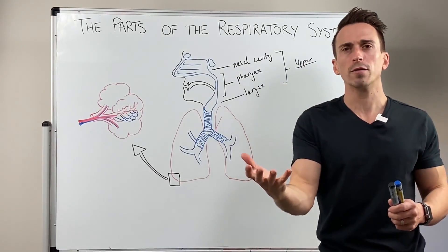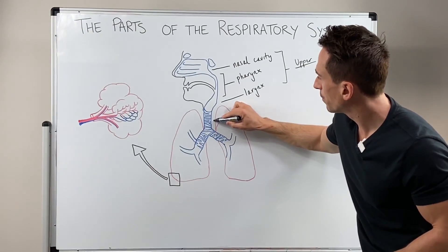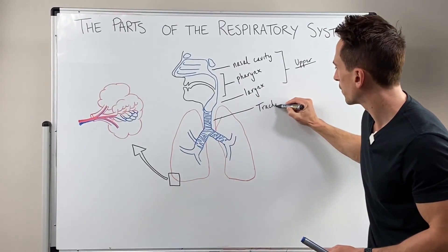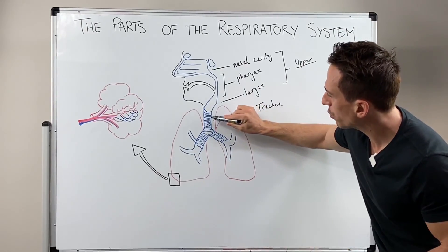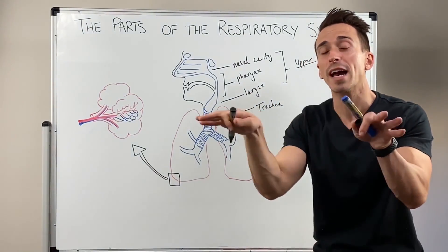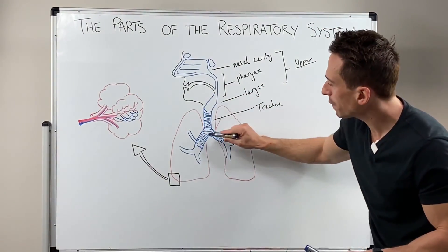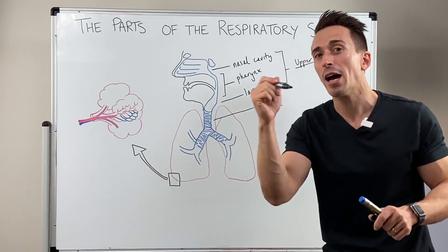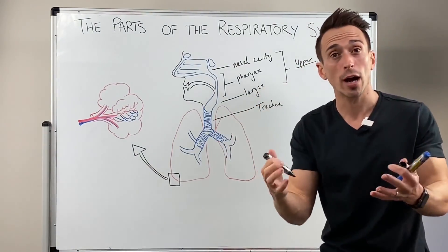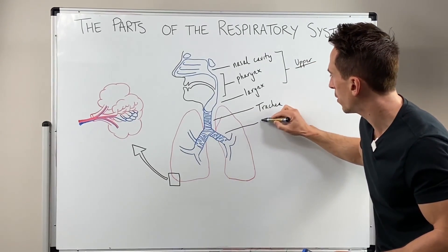So what do lower respiratory tract infections refer to? Well, we then go to the trachea. Air passes through the trachea and then the trachea splits — this is known as a bifurcation. It bifurcates left and right, and once it bifurcates it turns into the left and right main stem bronchi — like the stem of a tree. So these are called bronchi.